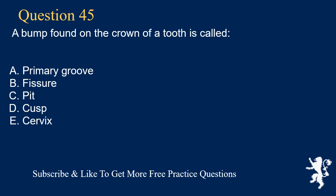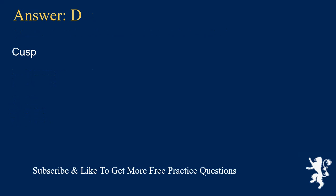Question 45. A bump found on the crown of a tooth is called: A. Primary groove, B. Fissure, C. Pit, D. Cusp, E. Cervix. Answer: D. Cusp.